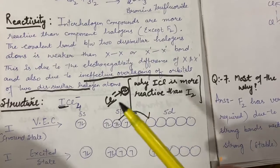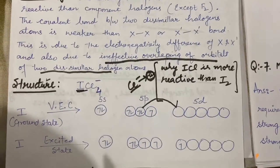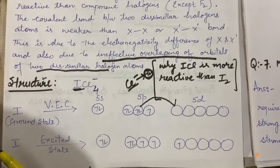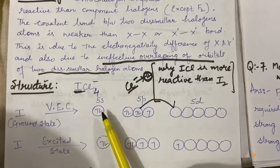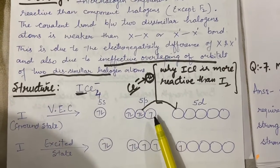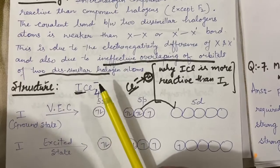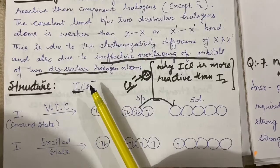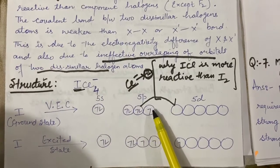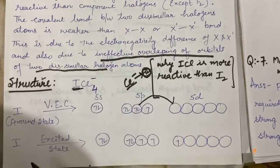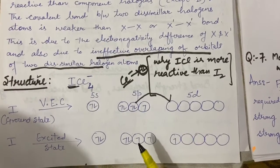In ICl4⁻ ion there are three normal covalent I-Cl bonds and one coordinate I-Cl bond which requires one empty d-orbital of Iodine. For any molecule's geometry, we will start from the ground state. Iodine has valence configuration of 5s² 5p⁵ in which there is only one unpaired electron. To form 3 covalent bonds we need three unpaired orbitals, but we have only one unpaired orbital, so we will do excitation of electrons. One of the 5p electrons gets excited into the d-orbital.